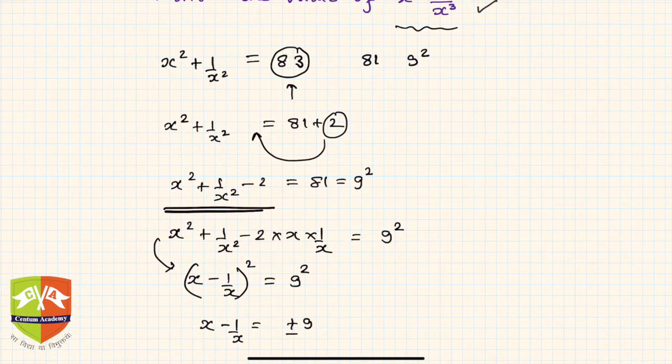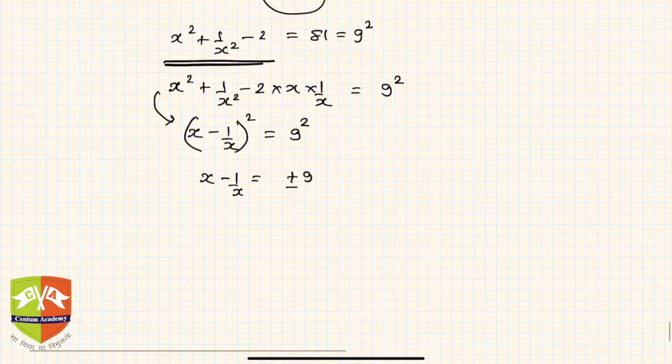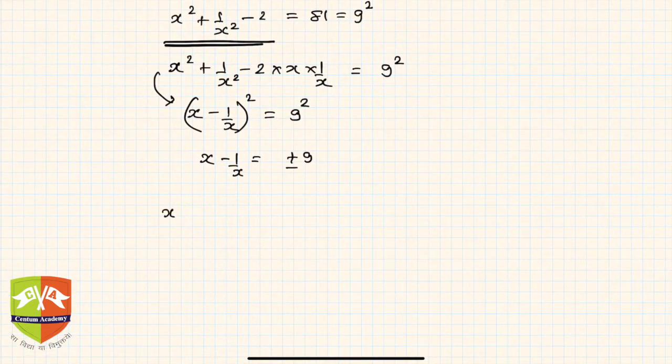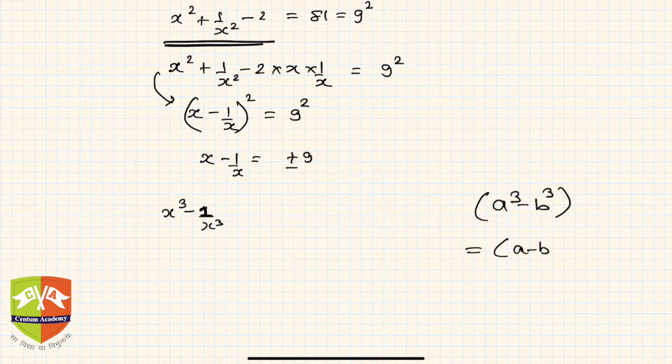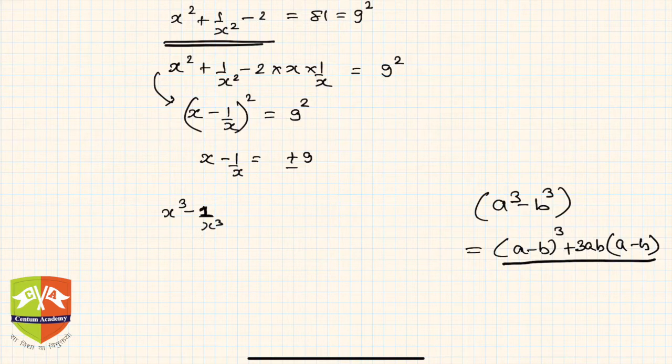So now what is the next step? The question was to find out x³ - 1/x³. We know this identity: x³ - 1/x³. The a³ - b³ identity was given as (a - b)³ + 3ab(a - b). Another identity which we know is a³ - b³ = (a - b)(a² + ab + b²).